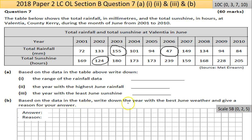Part B says: based on the data in the table, write down the year with the best June weather and give a reason for your answer. This is tricky because what's a good year depends on your perspective — for someone in agriculture it could be lots of sun and lots of rain; for someone who wants a tan it could be no rain and lots of sun. Any justification based on your answer is acceptable, but you have to pick an answer.